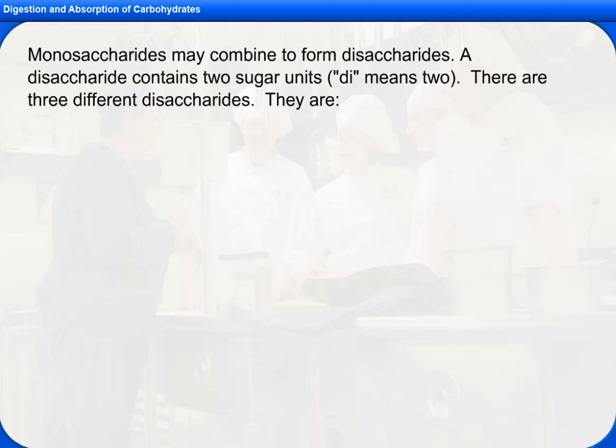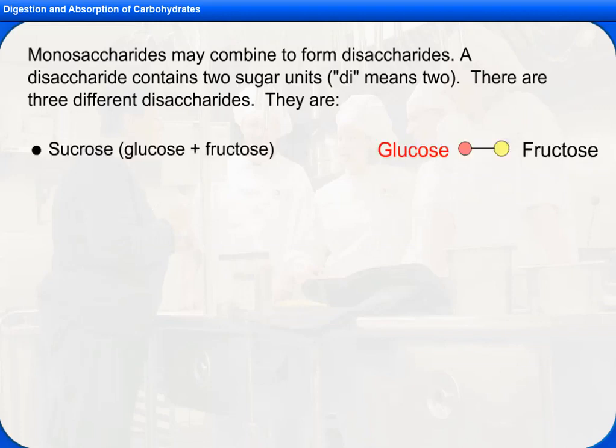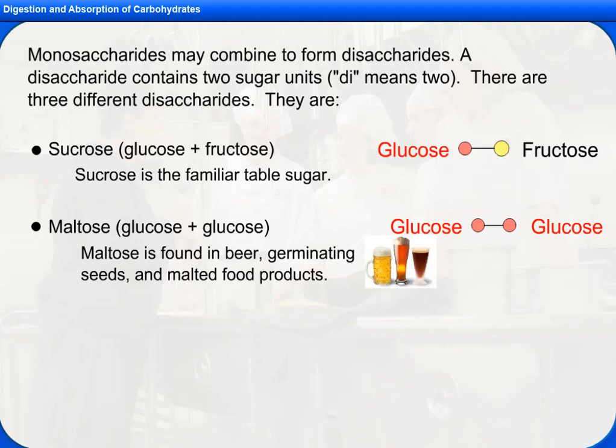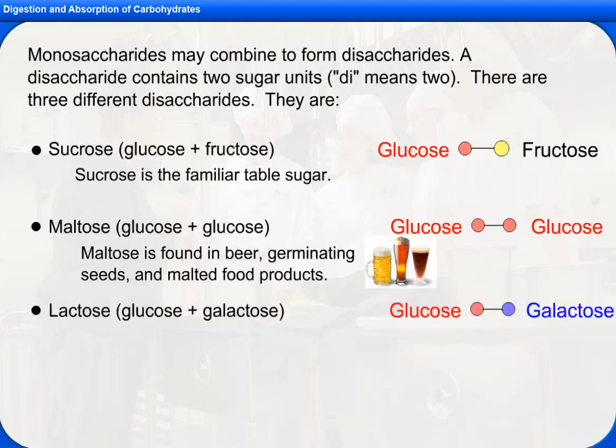Monosaccharides may combine to form disaccharides. A disaccharide contains two sugar units — di means two. There are three different disaccharides: sucrose, which is glucose and fructose and is the familiar table sugar; maltose, which is glucose and glucose, found in beer, germinating seeds, and malted food products; and lactose, which is glucose plus galactose.